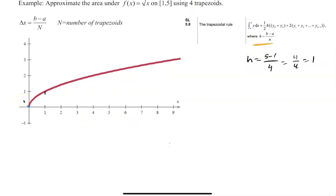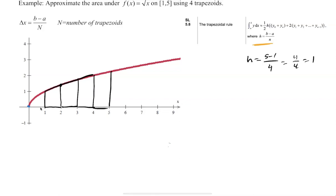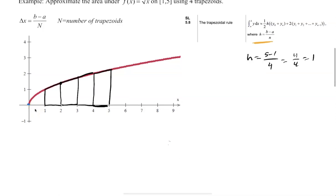Starting at x = 1, we go 1 unit over each time, drawing vertical lines and connecting them to the curve to form each trapezoid. We continue this until we reach x = 5. That gives us our trapezoidal approximation, and all we need to do is add the areas of these four trapezoids to approximate the area from 1 to 5.